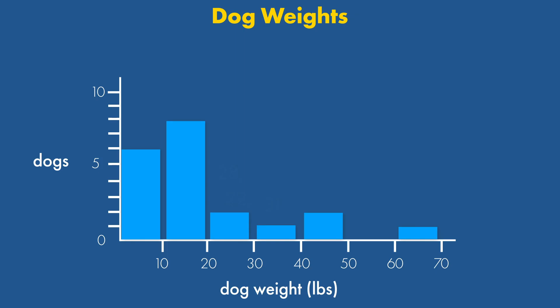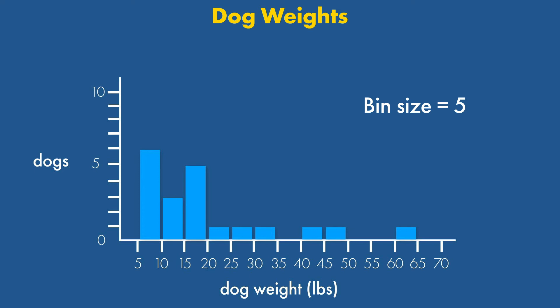First, let's reduce the bin size to intervals of 5 pounds. We can now see more details about the data, which is useful for the dogs between 5 and 20 pounds, but looks silly for the remaining weights, where it just shows us that there is one dog in some of the other weight ranges.